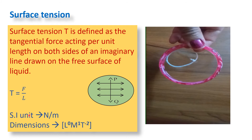Surface tension is force per unit length. Since force is measured in Newtons and length in meters, the SI unit of surface tension is Newton per meter (N/m). The dimensions of surface tension are M¹L⁰T⁻², derived from force dimensions M¹L¹T⁻² divided by length L¹, giving L⁰M¹T⁻².